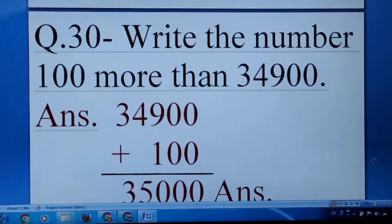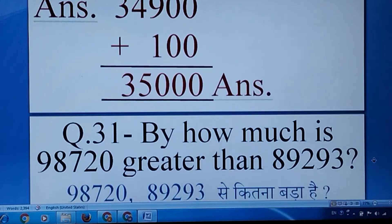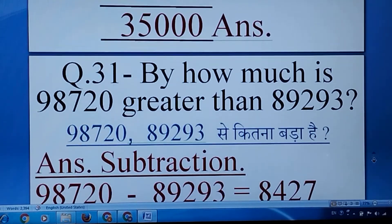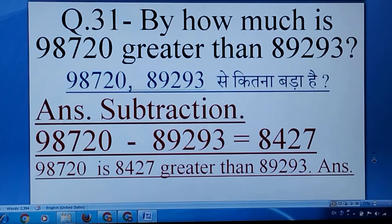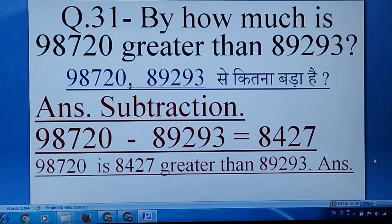Write the number 100 more than 3490 — it is 3590. By how much is 98,720 greater than 89,293? We will go for subtraction and find the difference. So 98,720 is 8,427 greater than 89,293.